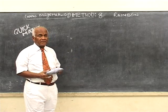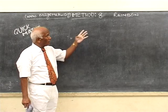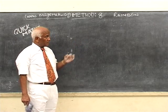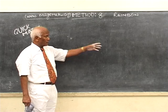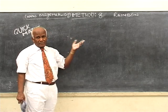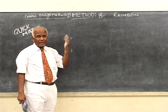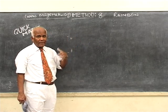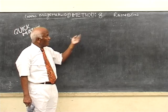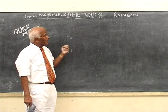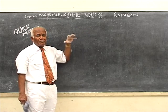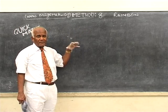The eighth method in our list is called the rainbow method, because we draw arcs — one child called it rainbow, so I am calling it rainbow. This is the most important multiplication method.